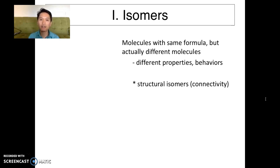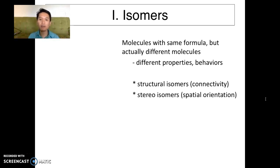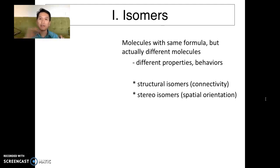The first type is called structural isomers. Structural isomers are molecules that have the same molecular formula and the same number of atoms, but these atoms are connected differently to each other. Then we'll talk about something new called stereoisomers. Stereoisomers have the same formula and the same connectivity, but the way they're arranged in 3D space makes them different.